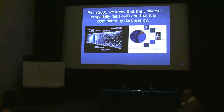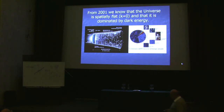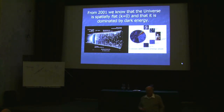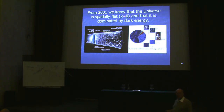73% of the energy content of the universe is provided by dark energy, which is another word for vacuum energy. The simplest model of dark energy assumes one or more scalar fields with a potential. All supergravity and superstring theories imply the existence of many scalar fields, so this is not a surprise. The potential energy of these scalar fields plays the role of a cosmological constant, or an effective cosmological constant, and accounts for the dark energy.